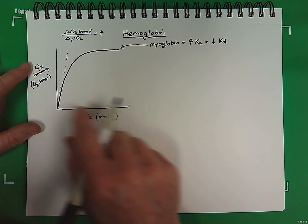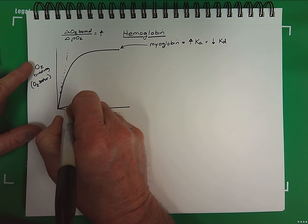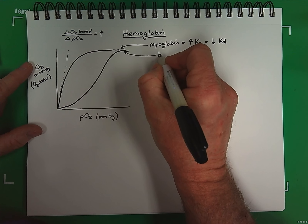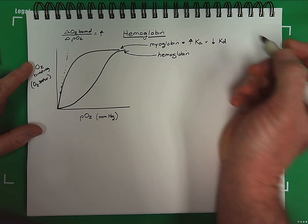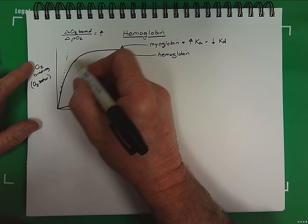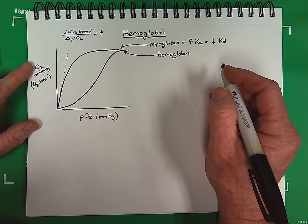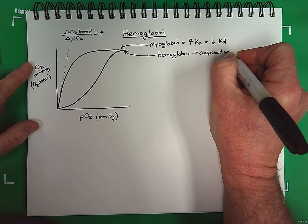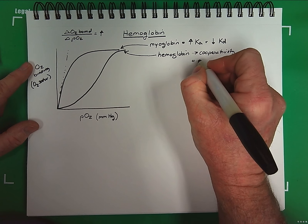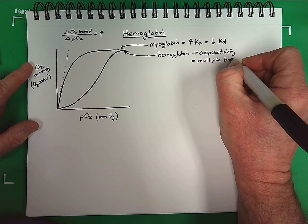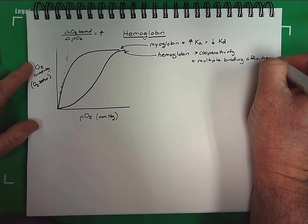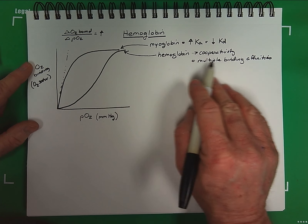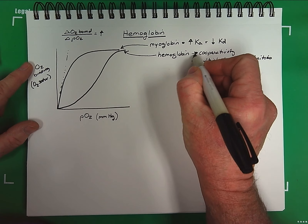If we look at hemoglobin on this same curve, we have transitioned from a hyperbolic curve into a sigmoidal curve. What the sigmoidal curve indicates is cooperativity, which also means multiple binding affinities. Whereas myoglobin has one affinity for oxygen, hemoglobin has multiple binding affinities, and it binds in a manner that is called cooperative.